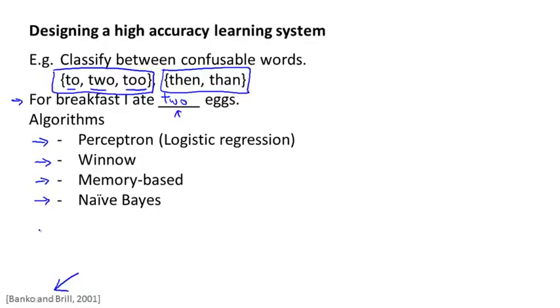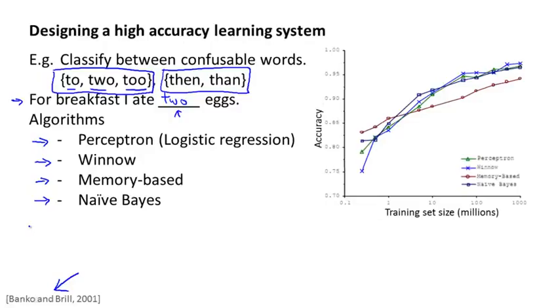But what they did was, they varied the training set size, and tried out these learning algorithms on a range of training set sizes. And that's the result they got. And the trends are very clear, right? First, most of these algorithms give remarkably similar performance. And second, as the training set size increases, on the horizontal axis is the training set size in millions. As you go from a hundred thousand up to a thousand million, that is a billion training examples, the performance of the algorithms all pretty much monotonically increase.